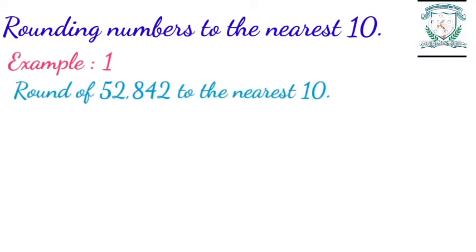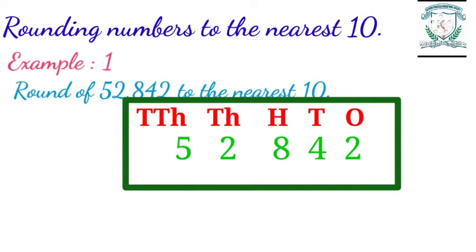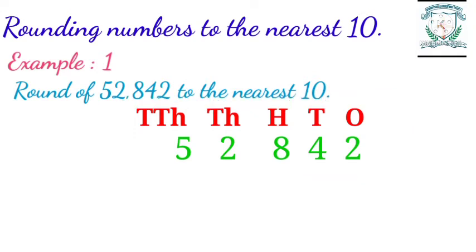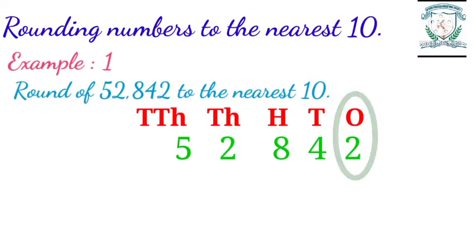Example one: round off 52,842 to the nearest ten. Step one: arrange the number in a place value chart. Step two: identify the place to be rounded — that is, in 52,842, the tens place should be rounded off to the nearest ten. Step three: check the digit in the ones place.